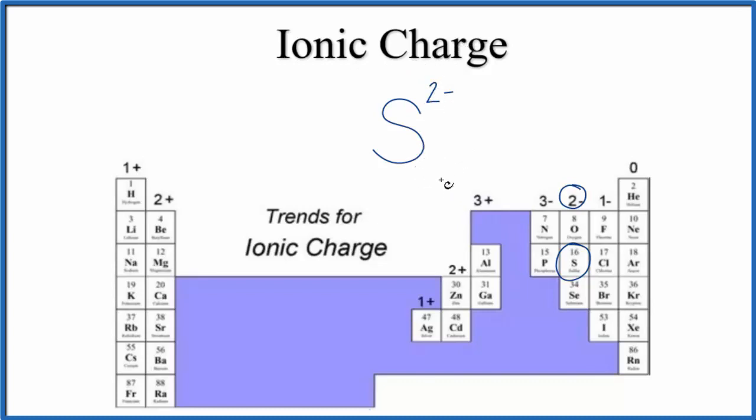We could also write the electron configuration to kind of understand why it has this 2- charge. So if we're thinking of just sulfur as it's found on the periodic table, not the ion, just S right here, we see that it has 16. That's the atomic number. That's the number of protons, also the number of electrons. So we can write the electron configuration for sulfur, and we have to distribute 16 electrons around the nucleus. Let's do that.